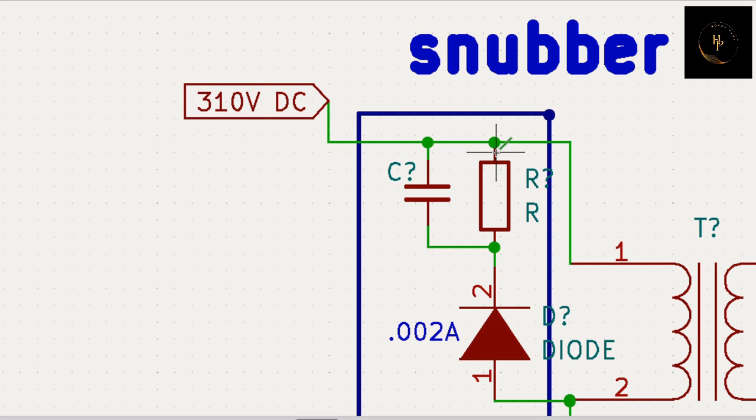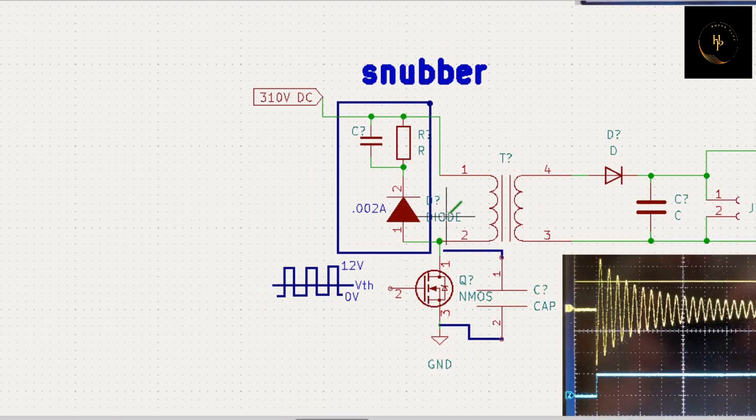So some voltage stores in this capacitor, some voltage goes through this path. When this MOSFET is off, that is the off condition.